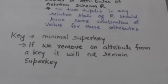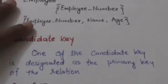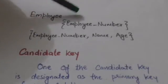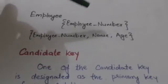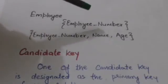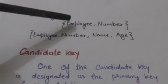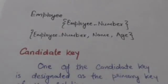It means if we remove any attribute from a key, then it will not remain a super key. Suppose there is a relation employee. This attribute set is a key of the employee relation. This set has only one attribute, that is employee number.